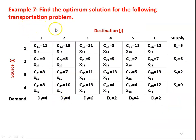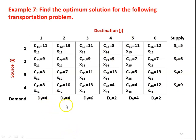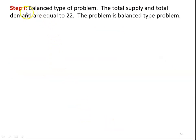We take example number 7: find the optimum solution for the following transportation problem. The problem has four source points and five destinations. The source points have supply capacity of 5, 6, 2, and 9. The destinations have demand of 4, 4, 6, 2, 4, and 2. The cost matrix is given, and we have to find the solution for the transportation model. It is a balanced type of problem — the total supply and the total demand are equal to 22.